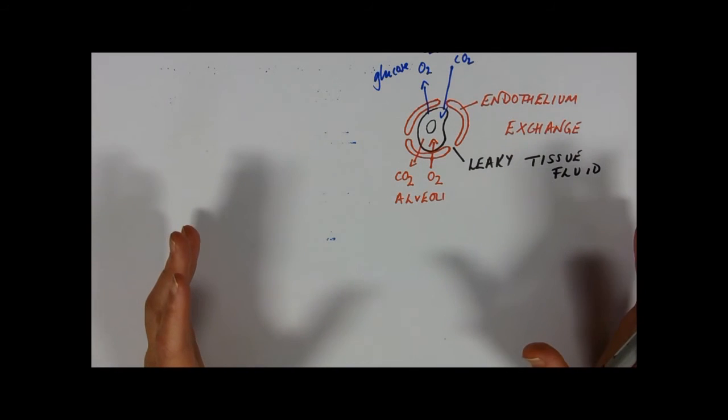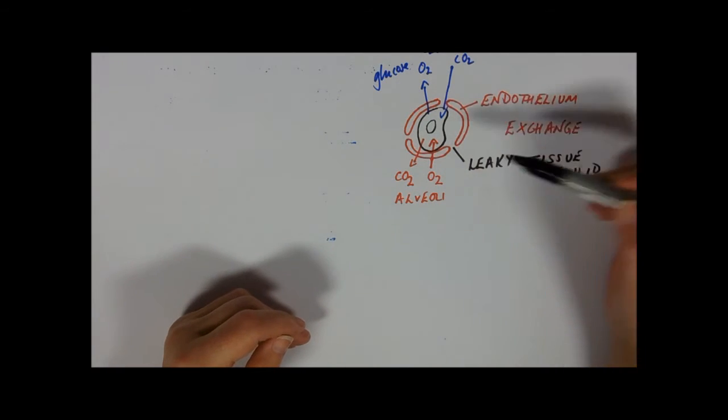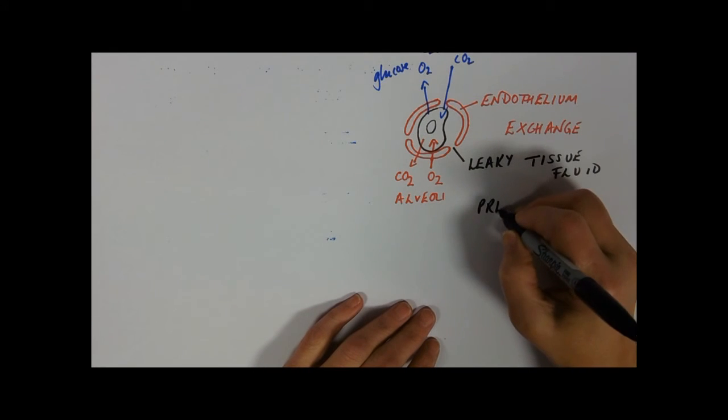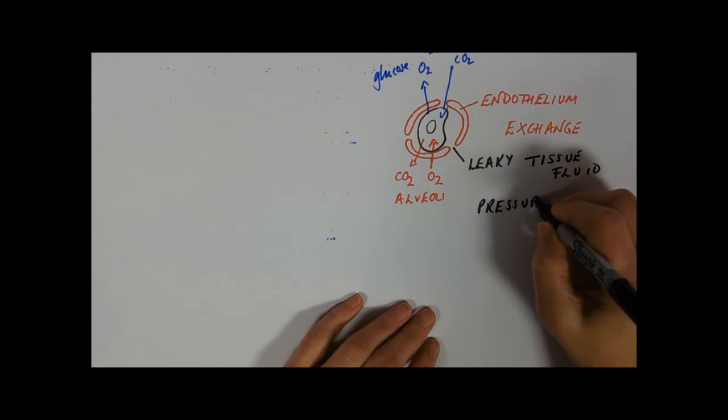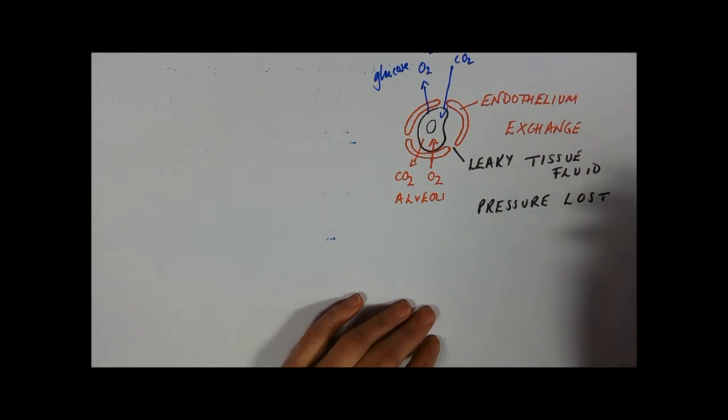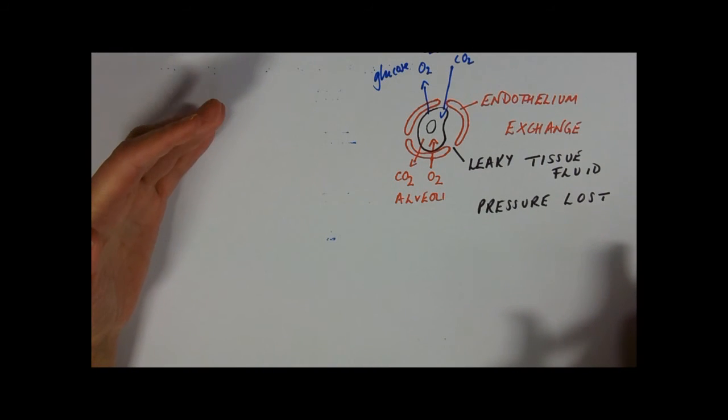This slows down the blood flow immensely, and obviously it's a narrower vessel, so there's more resistance. So this is the main area where the pressure is lost.